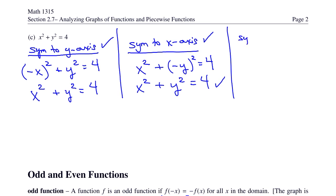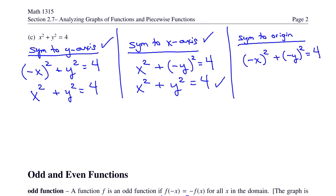Finally, check symmetry to the origin by substituting negative x for x and negative y for y. Negative x squared is just x squared, and negative y squared is y squared, so we again get x squared plus y squared equals 4 — the original equation. We have all three types of symmetry.